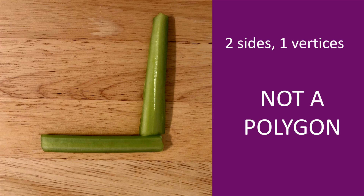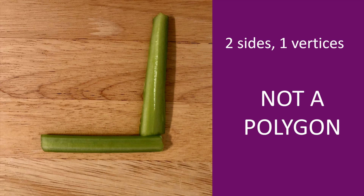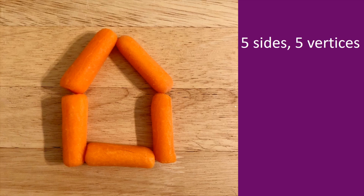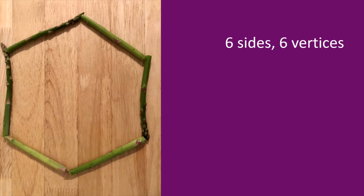Now we're going to take a look at some names of different polygons. Look at this polygon — can you count how many sides are on it? Five sides, five vertices. What is the name of a polygon with five sides and five vertices? It's a pentagon. Now count the sides and vertices on this one. Six sides, six vertices — it's a hexagon.